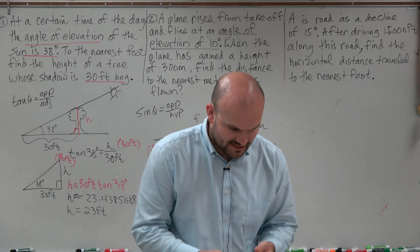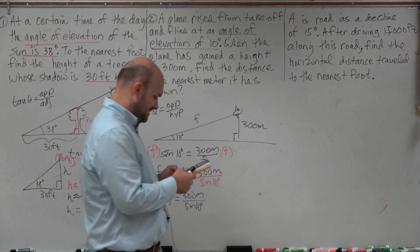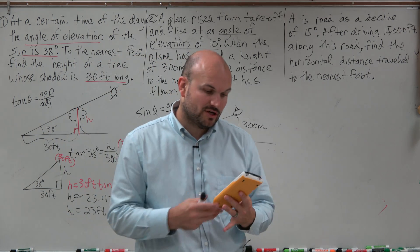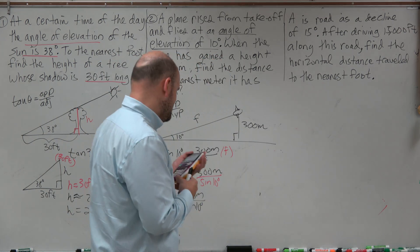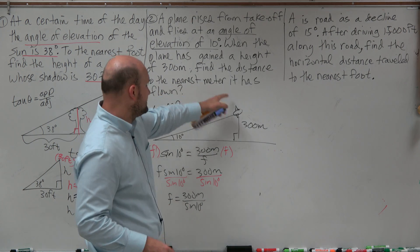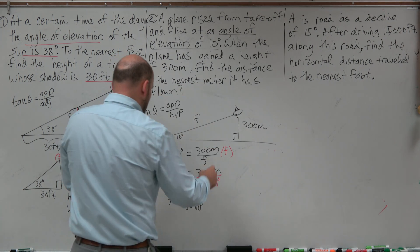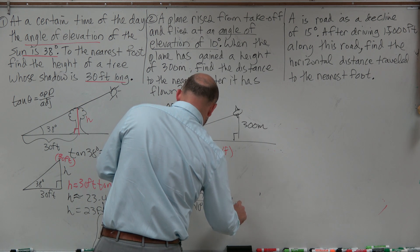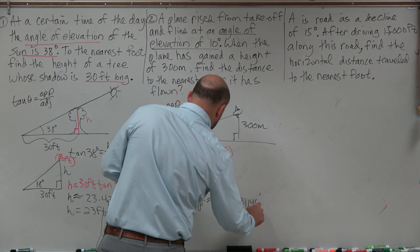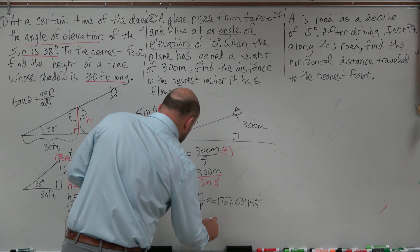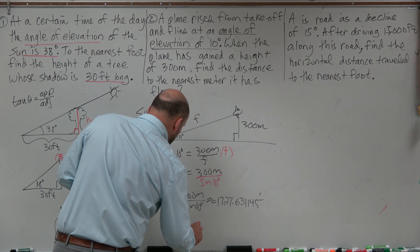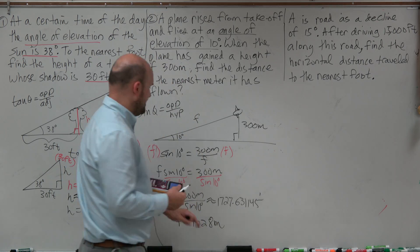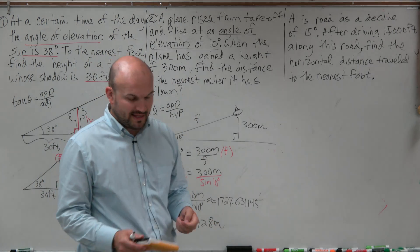Taking 300 divided by sine of 10 on the calculator gives approximately 1,727.631. Rounding to the nearest meter, f equals 1,728 meters. Make sure to include the unit — meters — in your answer.